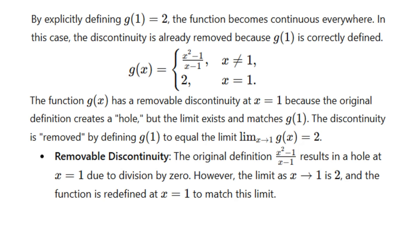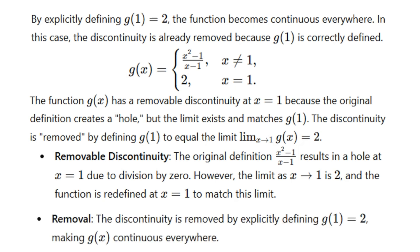The original definition of (x² - 1)/(x - 1) results in a hole at x equals 1 due to division by 0. However, the limit as x tends to 1 is 2, and the function is defined at x equals 1 to match the limit. The discontinuity is removed by explicitly defining g(1) = 2, making g(x) continuous everywhere. Despite the point of discontinuity, the function is actually continuous.